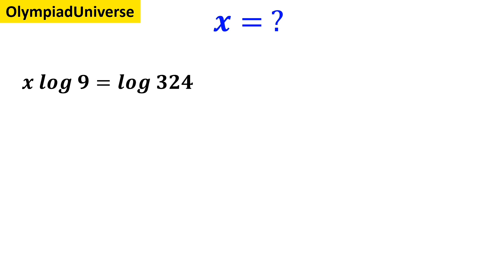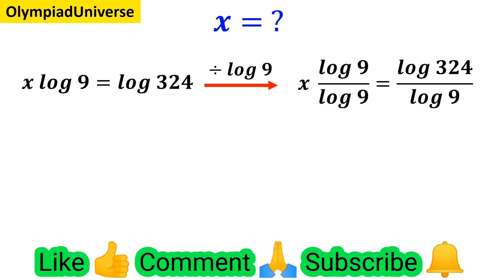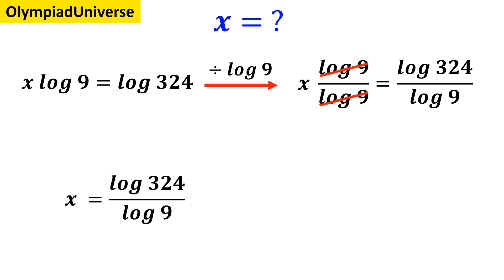Now we divide both sides of the equation by log of 9, which becomes x times log of 9 over log of 9 equals log of 324 over log of 9. The log of 9 terms cancel out, and this expression simplifies to x equals log of 324 over log of 9.